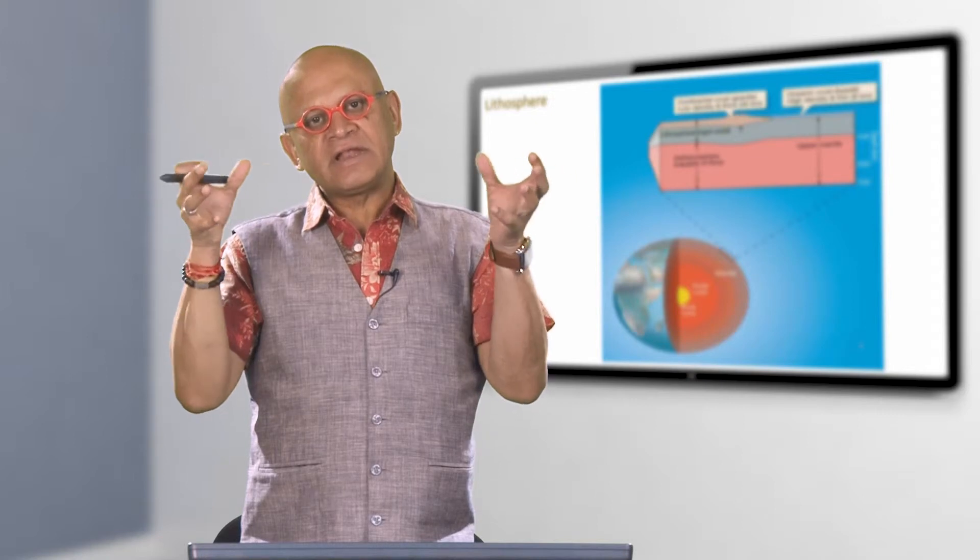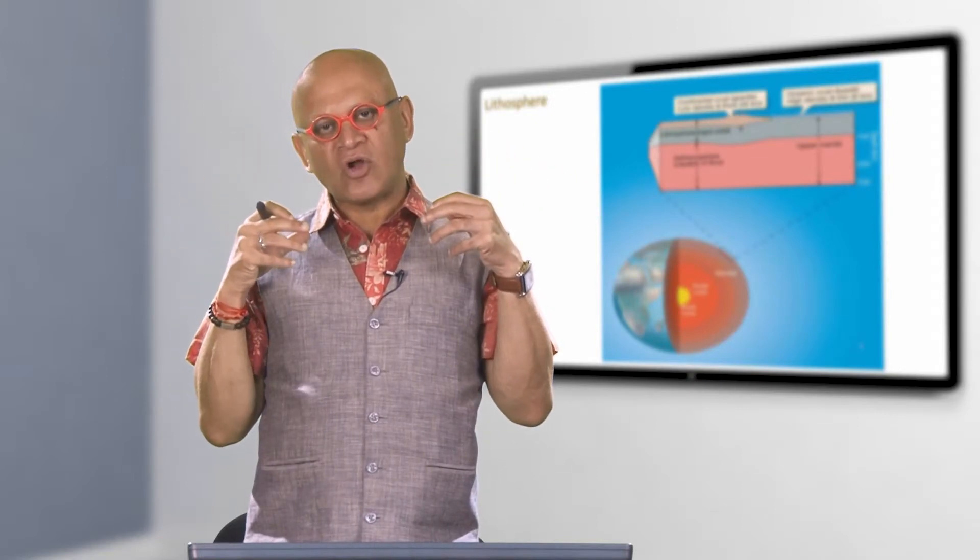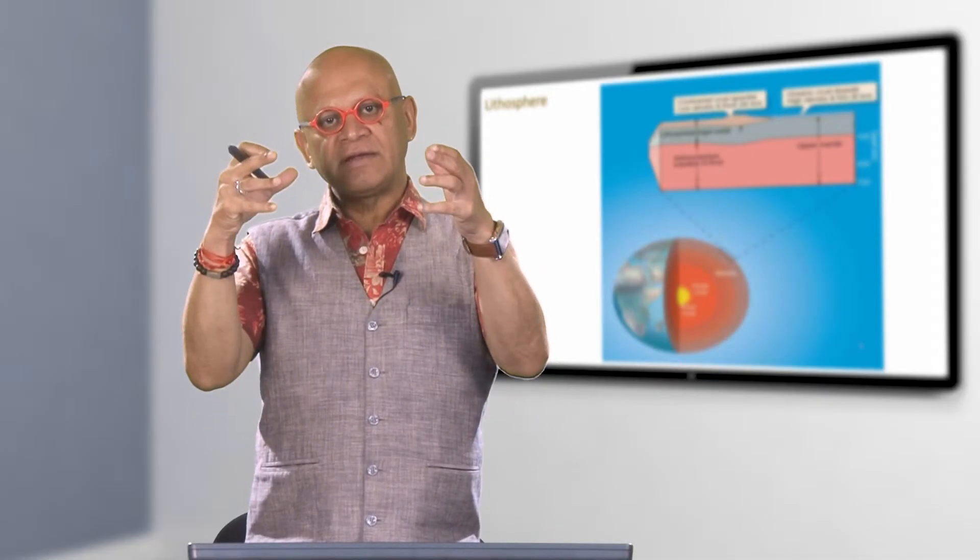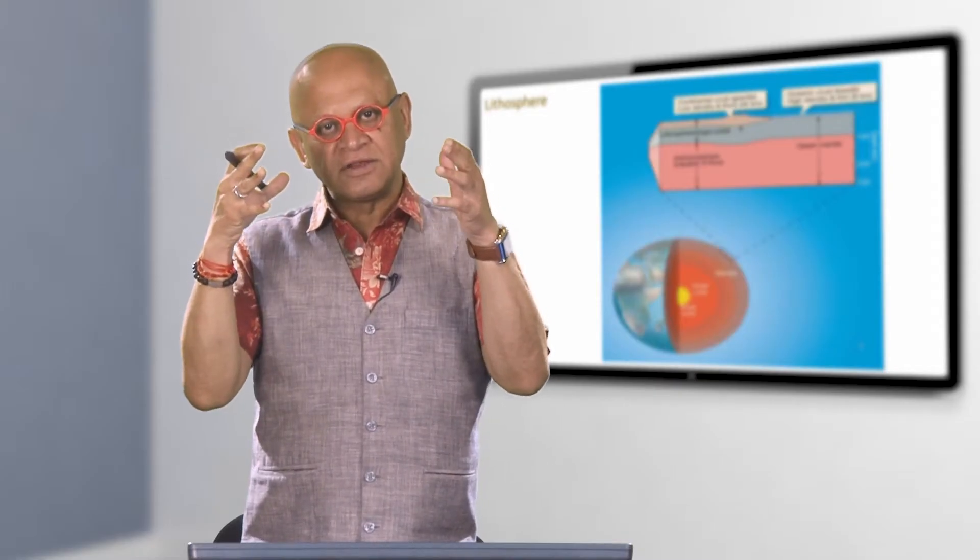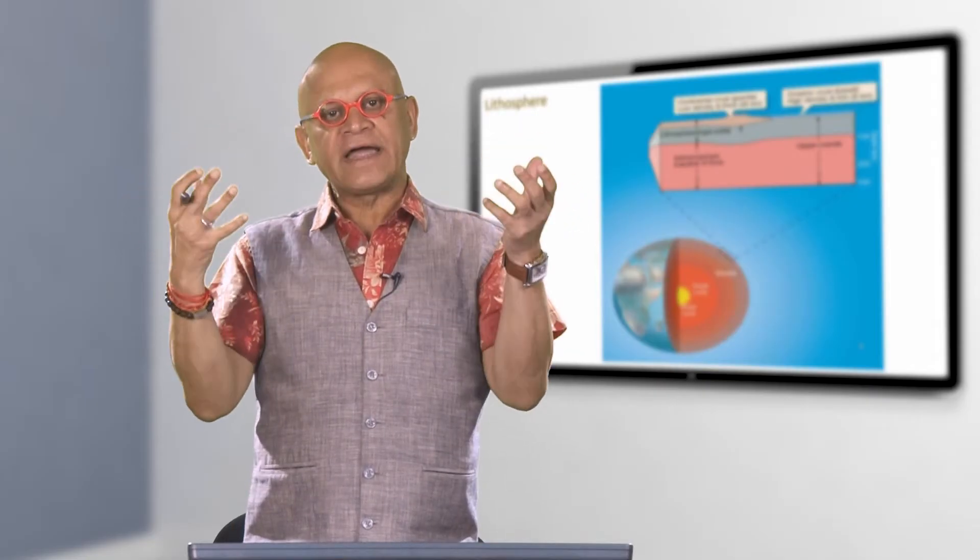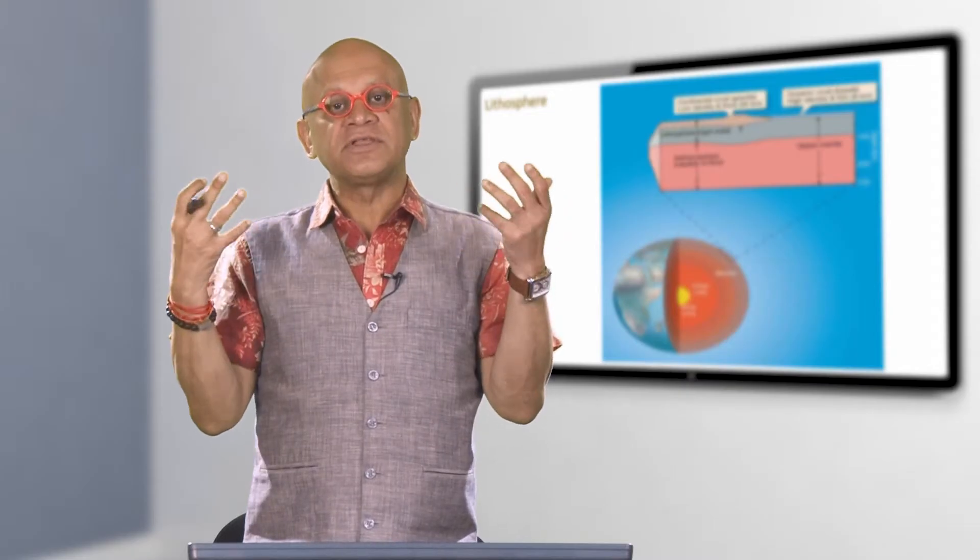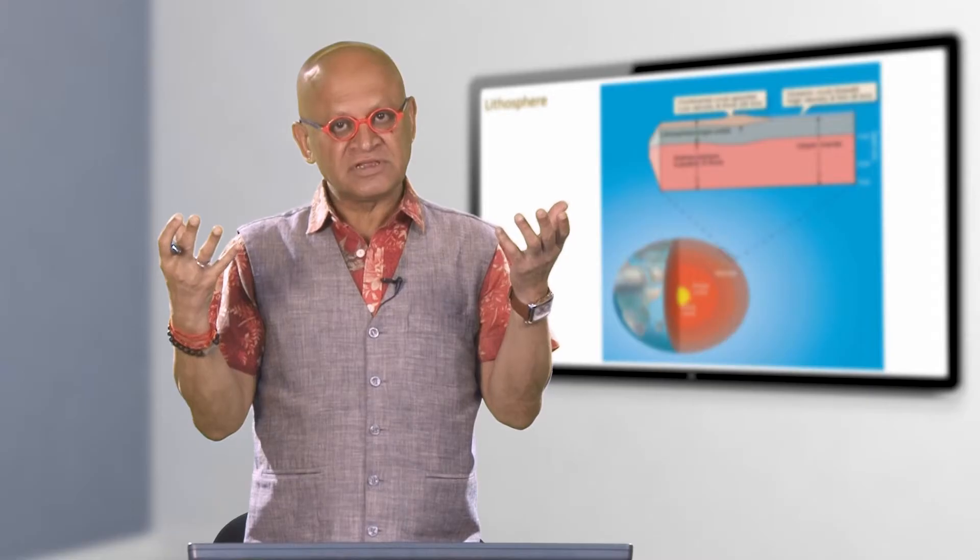We will get a little bit later into a very specific example of how the Indian subcontinent itself moved over several million years, how it created the Himalayas, how that affected the regional climate and the global climate, and how that created also a change in carbon dioxide, leading to creation of new species of plants and some animals.